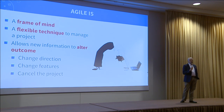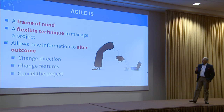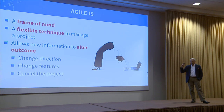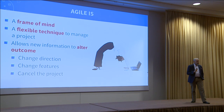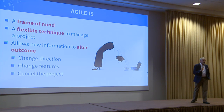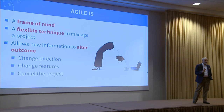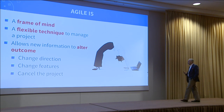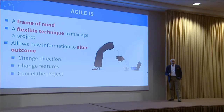Agile is a frame of mind. It's a flexible technique to manage a project. It allows new information to alter the outcome of the project. We use it because the problems we're solving today aren't the same as the primitive accounting systems we solved in the 1970s and 80s. They're complex, they're hard, and we don't have a well-defined principle on it.